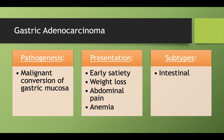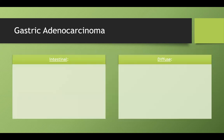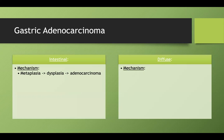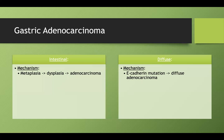There are two subtypes we need to know about: the intestinal subtype and the diffuse subtype. The intestinal subtype forms through the mechanism we've already discussed — metaplasia turns into dysplasia and turns into adenocarcinoma, as we've seen with chronic autoimmune gastritis. In diffuse gastric adenocarcinoma, you don't have this pathway; instead, you have an E-cadherin mutation that forms diffuse adenocarcinoma.